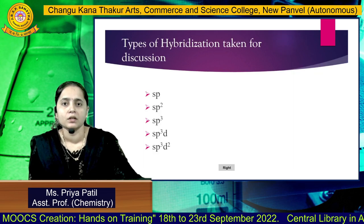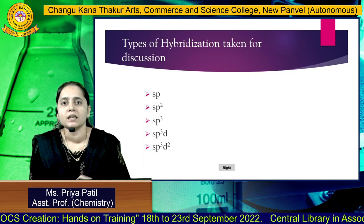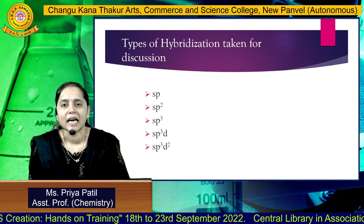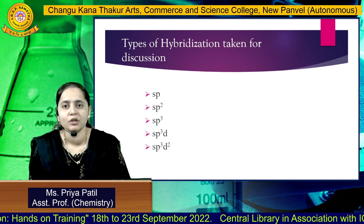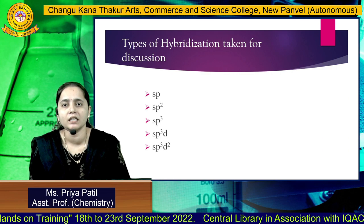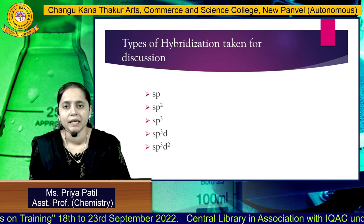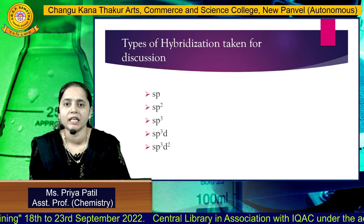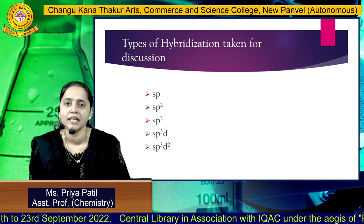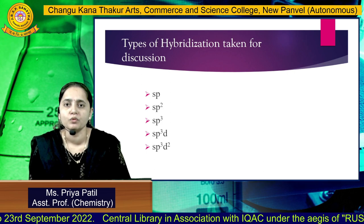Today's types of hybridization we have taken for discussion are SP, SP2, SP3, SP3D, and SP3D2.